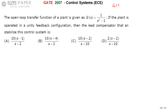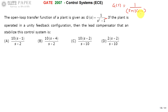G(s) is given as 1 by s squared minus 1, which can be written using the a squared minus b squared formula as 1 by (s+1)(s-1). So the open-loop transfer function consists of a pole at s = +1, which is on the right half of the s-plane. Therefore, the open-loop transfer function is unstable.